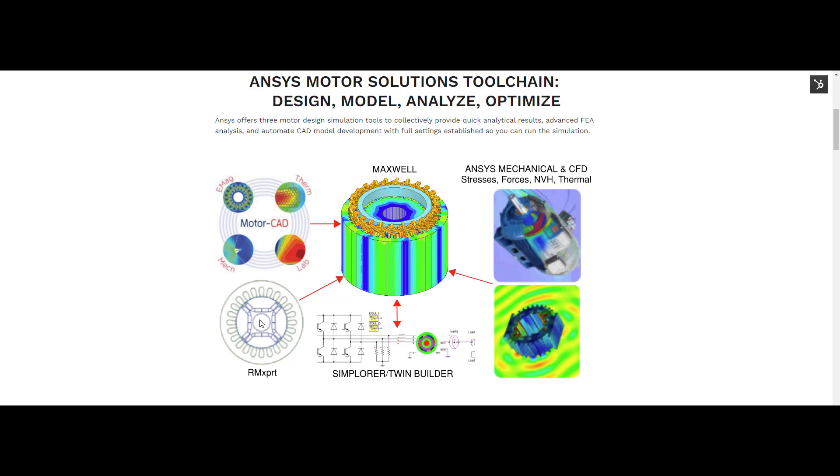RMxprt is a motor design tool that uses industry-based templates for material and standard motor selection, including axial flux motors. It can quickly and easily provide analytical electromagnetic results and automatically produce torque speed curves and other important motor design curves for analysis.